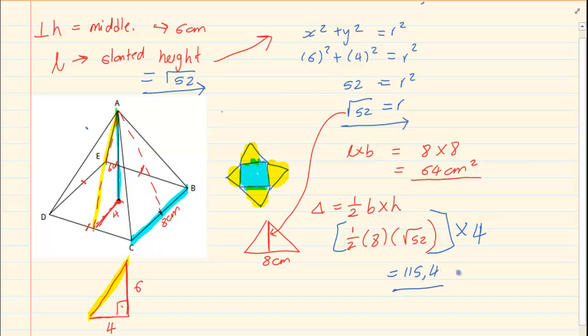If I want the total surface area, I am now going to add the two areas that I have, which will equal to 179.4. So the total surface area is going to equal to 179.4 centimeters squared.